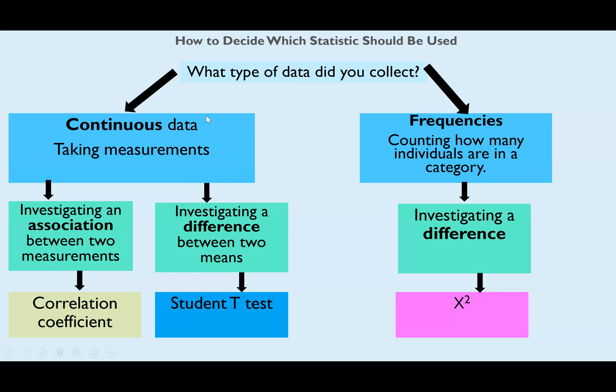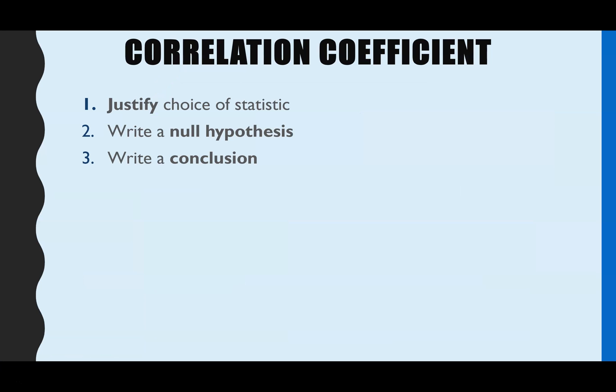And this flow diagram just takes you through how you know which of the three statistics you would be using. And in this video as I said we're just going through the correlation coefficient. So if you have continuous data meaning you're taking measurements and you're looking for an association or a correlation between those two measurements then it would be the correlation coefficient. So for example if you were looking at is there an association between temperature and enzyme rate of reaction. And that's one of the examples we're going to use later in this video.